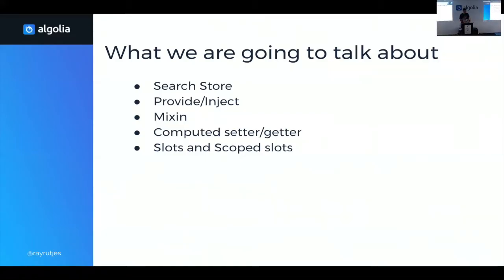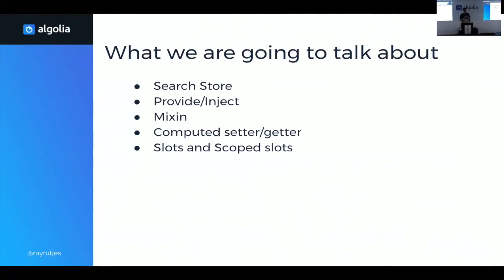So what we're going to talk about: the first concept I'd like to introduce is what we call the search store — it's basically what holds the state of your search, and every component is going to interact with that state. To make it available to every component, I'm going to talk about the Vue feature called provide/inject. I'll also talk about mixins and see how we can make it really easy for users to create custom components by leveraging Vue mixins. Finally, we'll have a quick look at computed setters and getters, and at the end I'll talk about slots and scoped slots to allow for easy customization of component output.